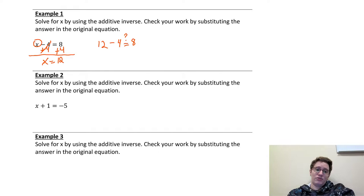Example 2, x plus 1 equals negative 5. The additive inverse of plus 1 or the opposite of plus 1 is to subtract 1. So, I'm going to subtract 1 from both sides. Now, this one might be tricky for some of us to just do in our head because of the 5 being negative.